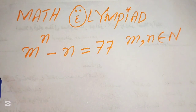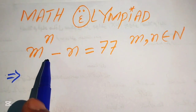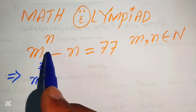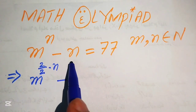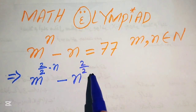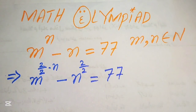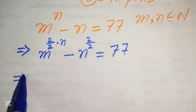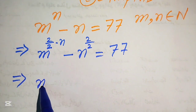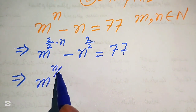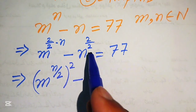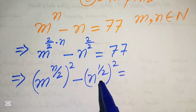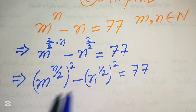The very first step is to focus on the exponents. We multiply and divide the exponent of m by 2, and similarly multiply and divide the exponent of n by 2, giving us equals to 77. Applying the exponent law, we move n over 2 inside the term to write m to the power of n over 2, whole squared, minus n to the power of 1 over 2, whole squared, equals to 77.